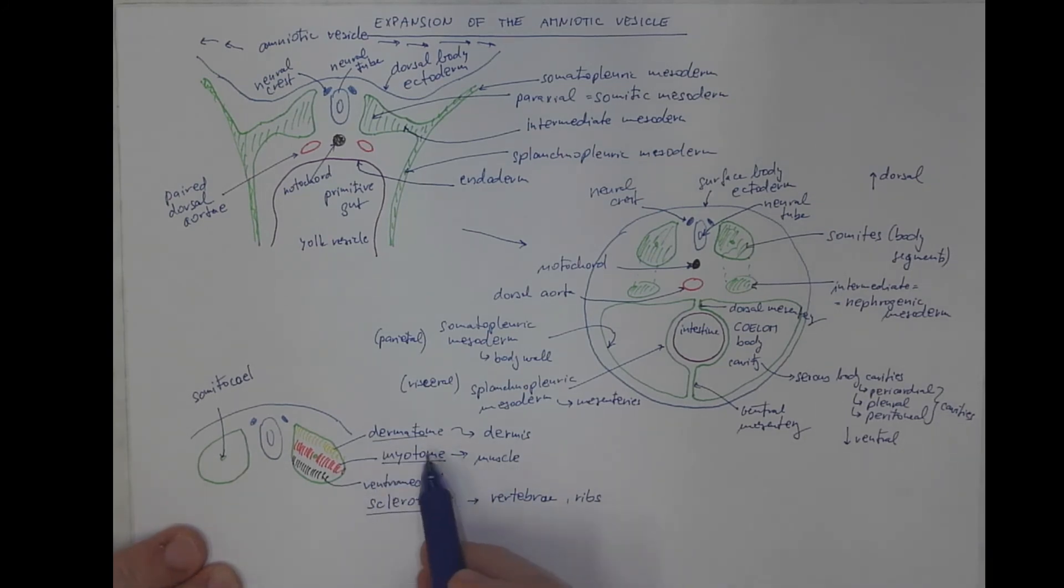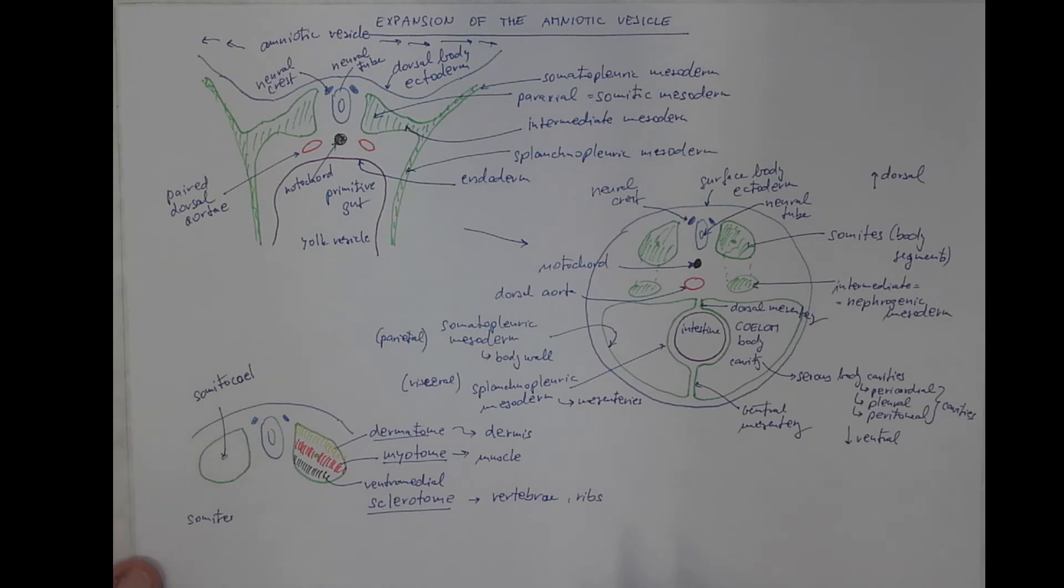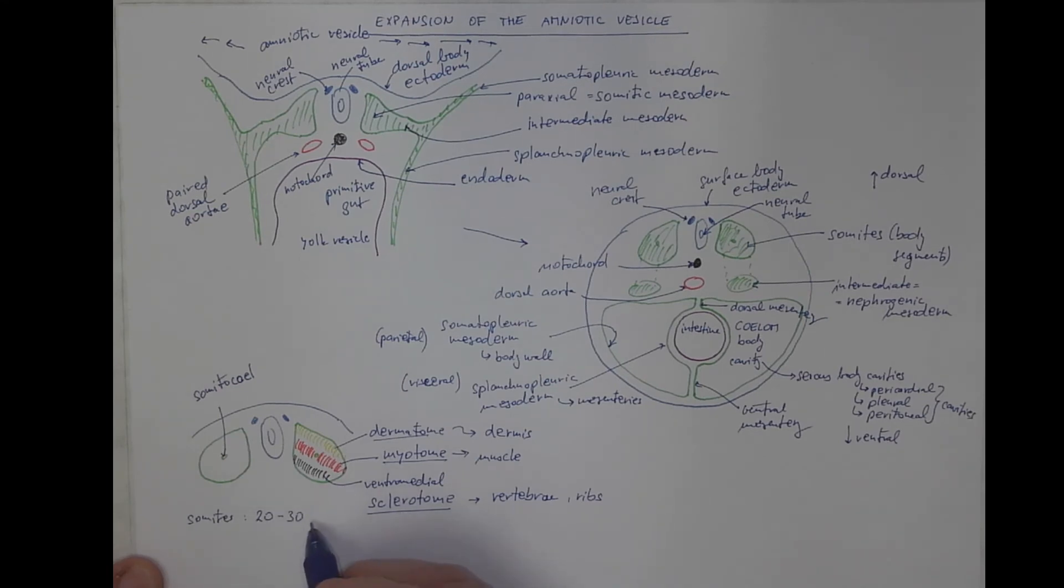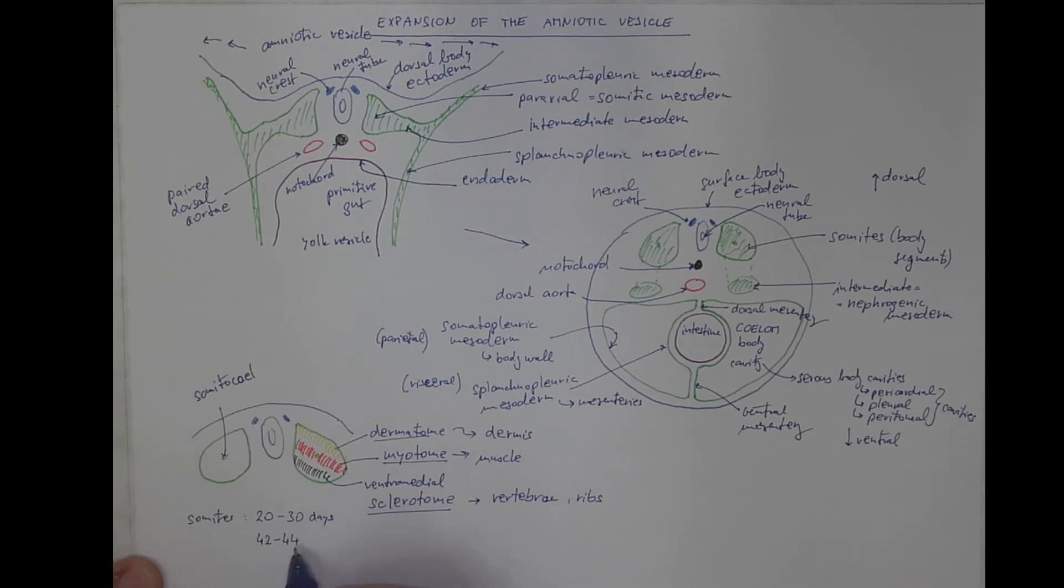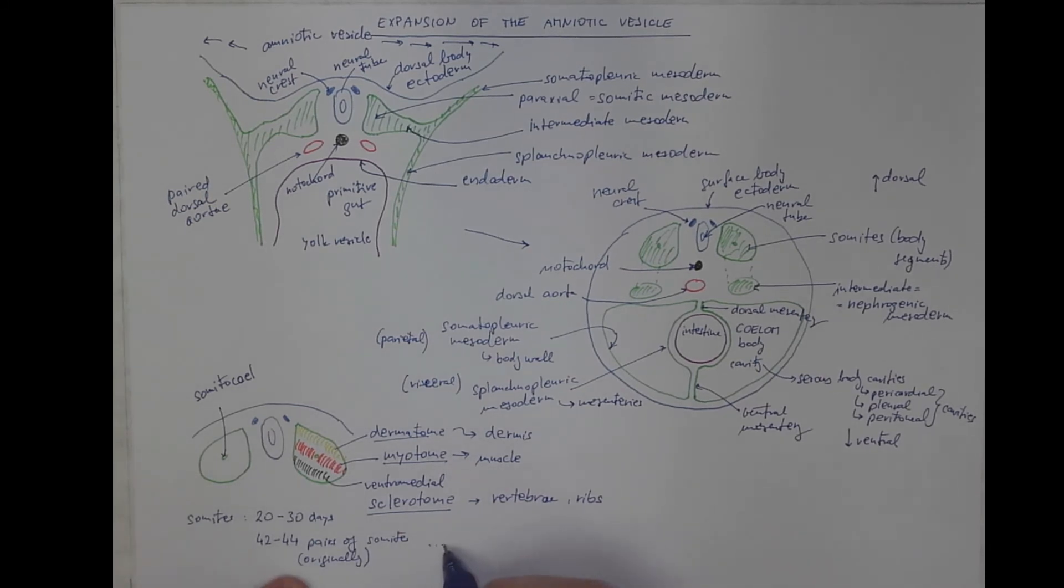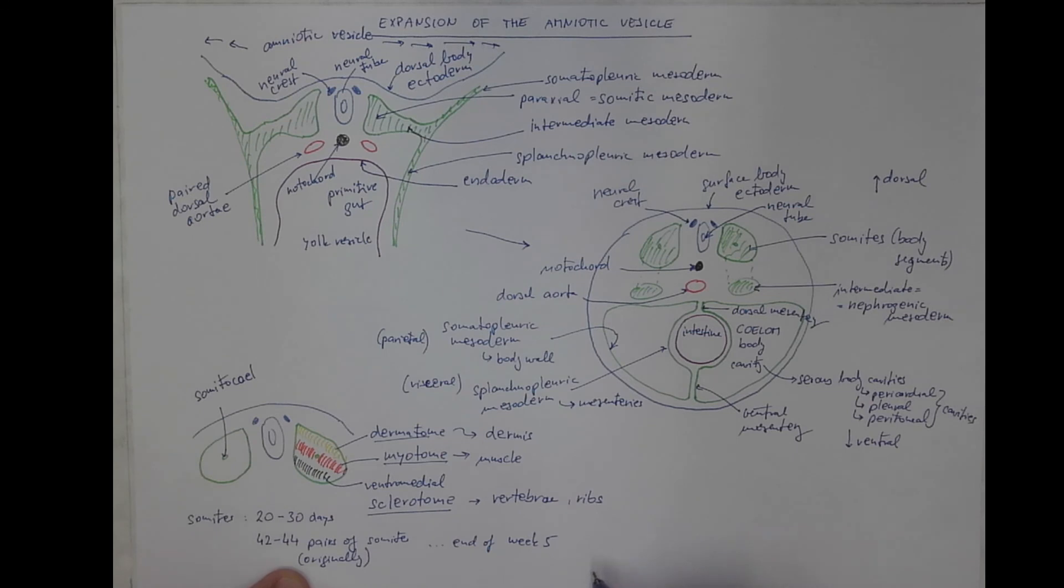We should not forget that even muscles and skin had this segmental origin. The somites are visible in the embryo. The somatic stage ranges between 20 and 30 days after fertilization. And by the end of the fifth week, 37 pairs persist.